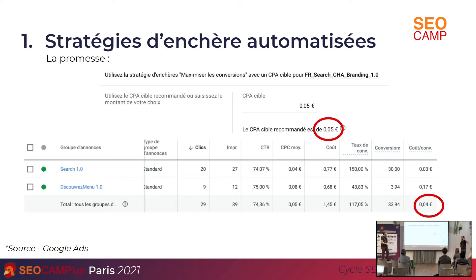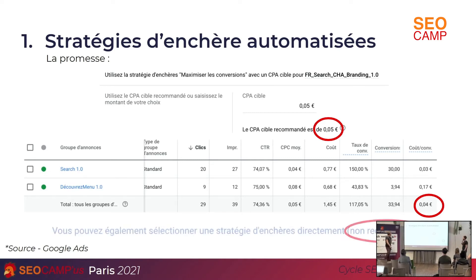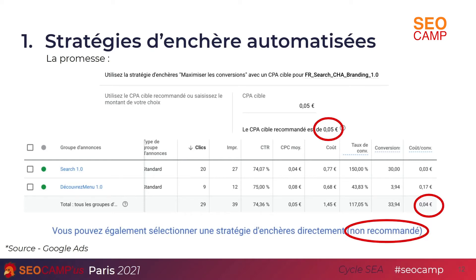Pour le CPA, vous précisez un budget — vous mettez 40 euros pour votre coût par acquisition et normalement il doit atteindre ces 40 euros. Là, le CPA conseillé, c'est 5 centimes, alors qu'on arrive à 4 centimes avec cette campagne de manière manuelle. Ça montre aussi que Google ne connaît pas toujours les objectifs d'une campagne. Sur cet exemple précis, on a une campagne de branding, donc on tourne avec un CPC très très bas et des coûts par conversion forcément très bas aussi.